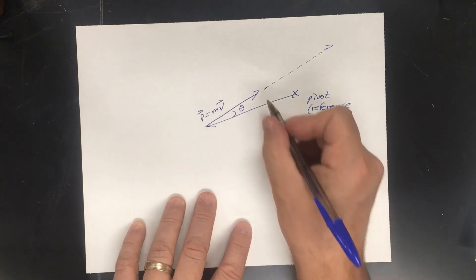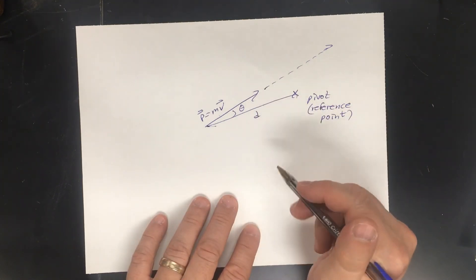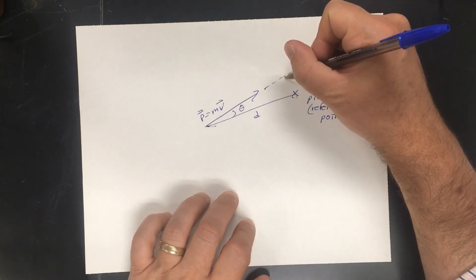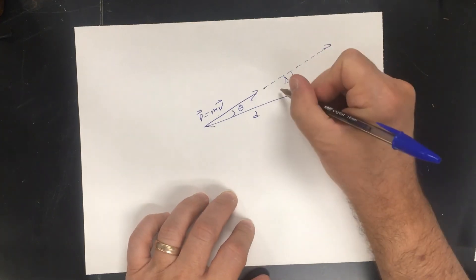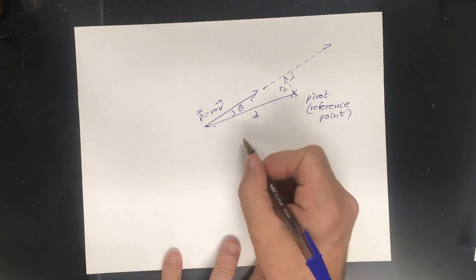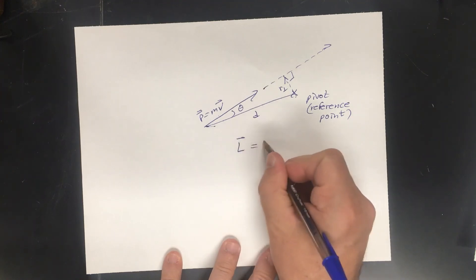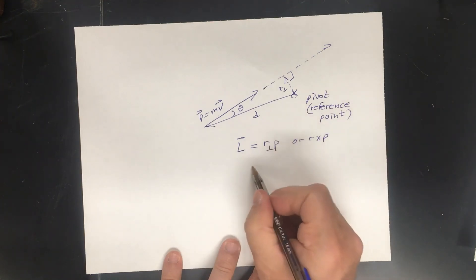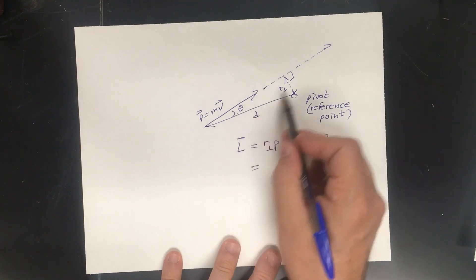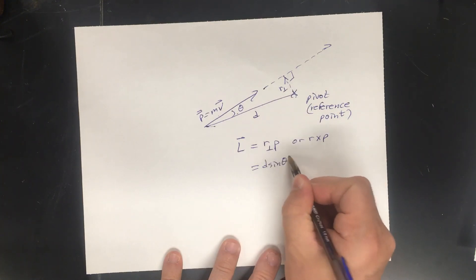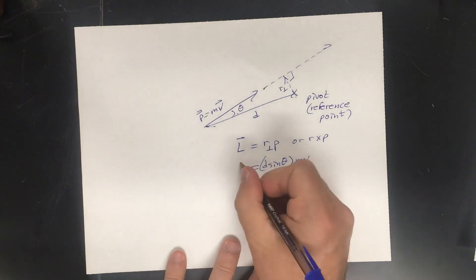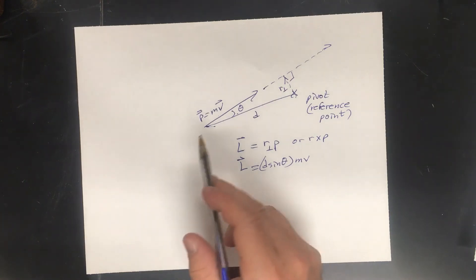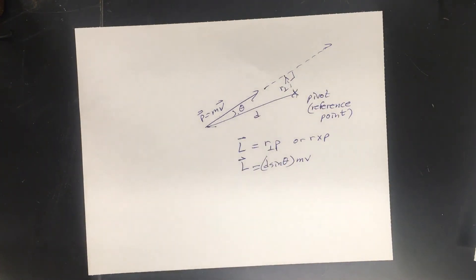So let's get some numbers. Let's say that this is theta. We'll say this is the distance to the pivot. You extend the line of action past the pivot, then perpendicular. This is your moment arm. So in this case, L equals your moment arm times your momentum or R cross P. Our moment arm at this point would be D sine theta times MV. Now, if you were to give me those numbers, we could easily calculate them. All right. That's how an object moving linearly can have angular momentum and how to calculate it.